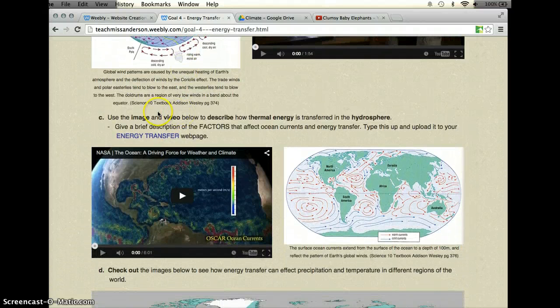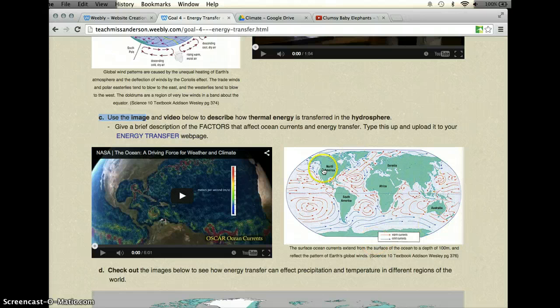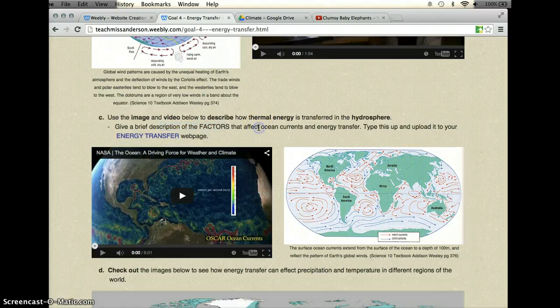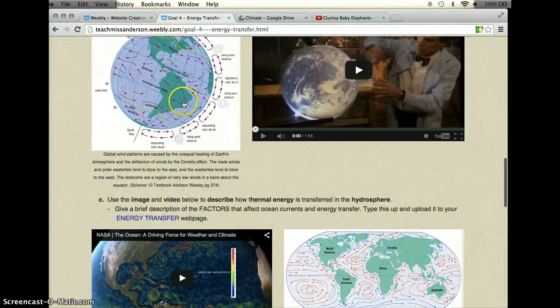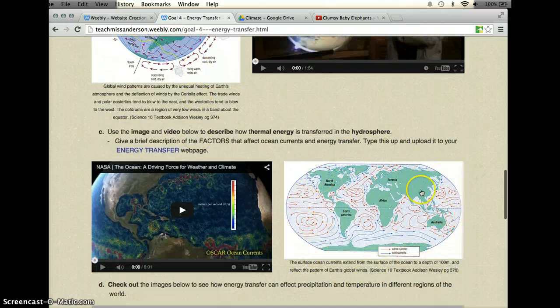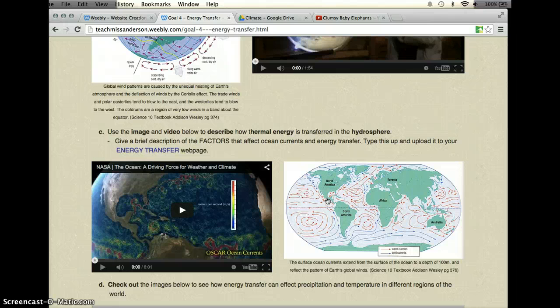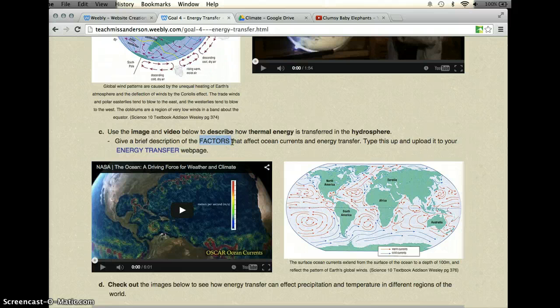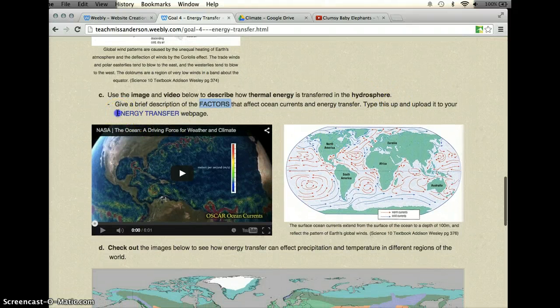You're going to do the same thing for section C. So you're going to use this video and this image to describe how thermal energy is transferred in the hydrosphere. You're going to give just a brief description of the factors that affect ocean currents and energy transfer. Some things that affect ocean currents that I can tell you right now is wind. So you're going to want to look at this wind diagram up here and see how it might affect some of our ocean currents as well as things like salinity. Check out some YouTube videos, do some research using the web. It can even be a list of factors that affect the ocean currents and energy transfer. Type this up and upload it to your energy transfer web page as well.